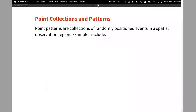So what are point collections and patterns? Basically, these are any randomly positioned events in space with an observation region. The region is important because not having events also gives us information about what's happening in space — we need both the points and the region.